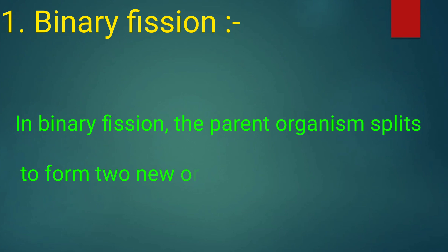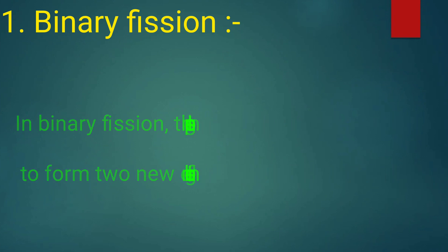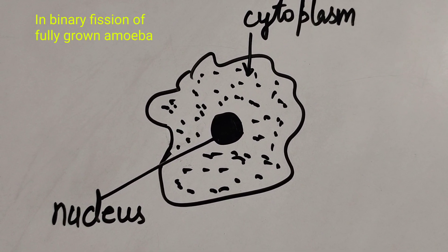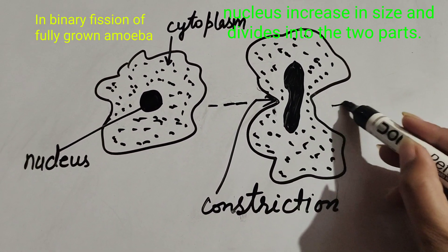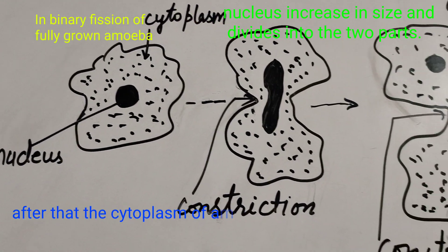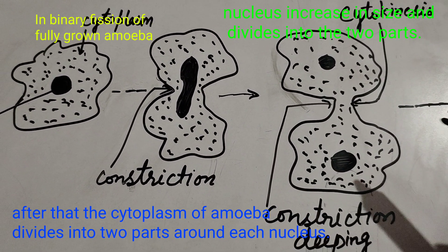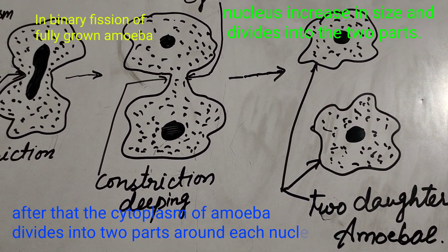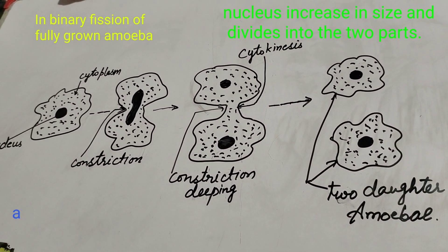In binary fission, the parent organism splits to form two new organisms of the same kind. In binary fission of a fully grown amoeba, the nucleus increases in size and divides into two parts. After that, the cytoplasm of amoeba divides into two parts around each nucleus, and in this way a single parent amoeba divides to form two daughter amoeba.